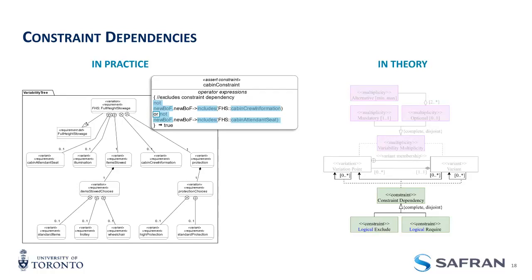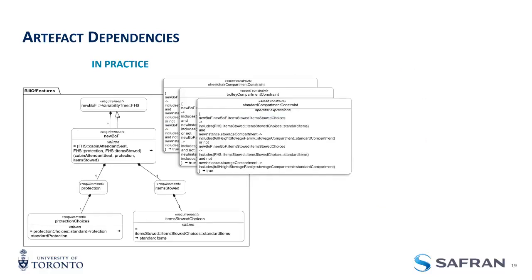With all of this, you can define the problem space. But you also have to connect it to the solution space — connect features to assets so that when you select a feature you know which assets to include in your configured product. To do that, we use artifact dependencies, which are implemented as constraints because SysML v2 doesn't have a physical dependency link we can use to connect them. For example, this constraint says that if my bill of features includes standard items, then my standard compartment is also included — and when all constraints are true, the model is valid, as required by SysML v2.